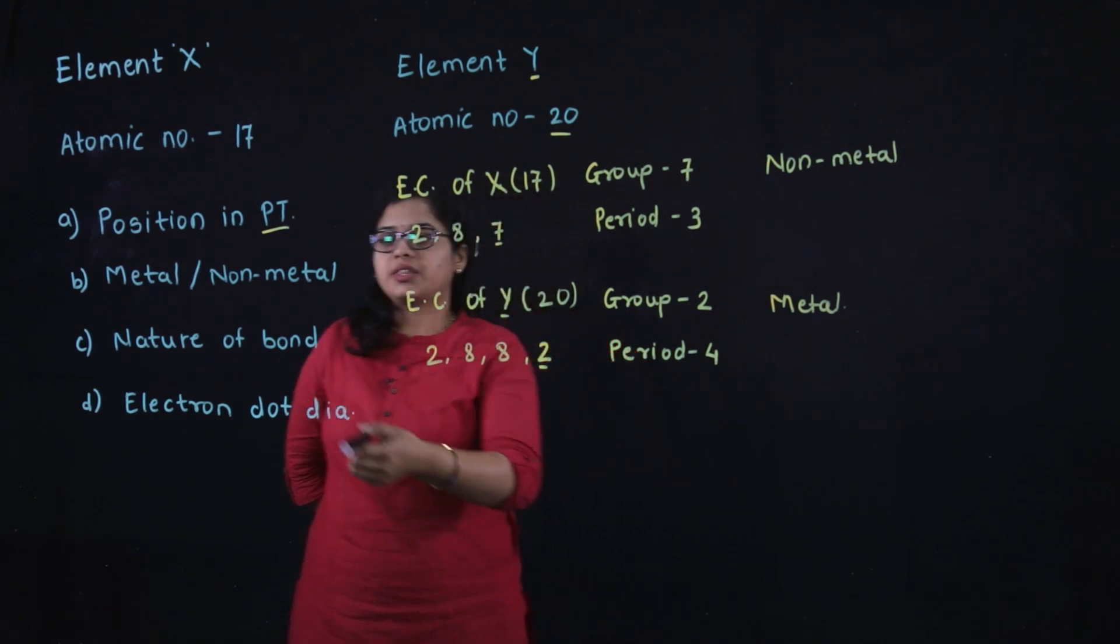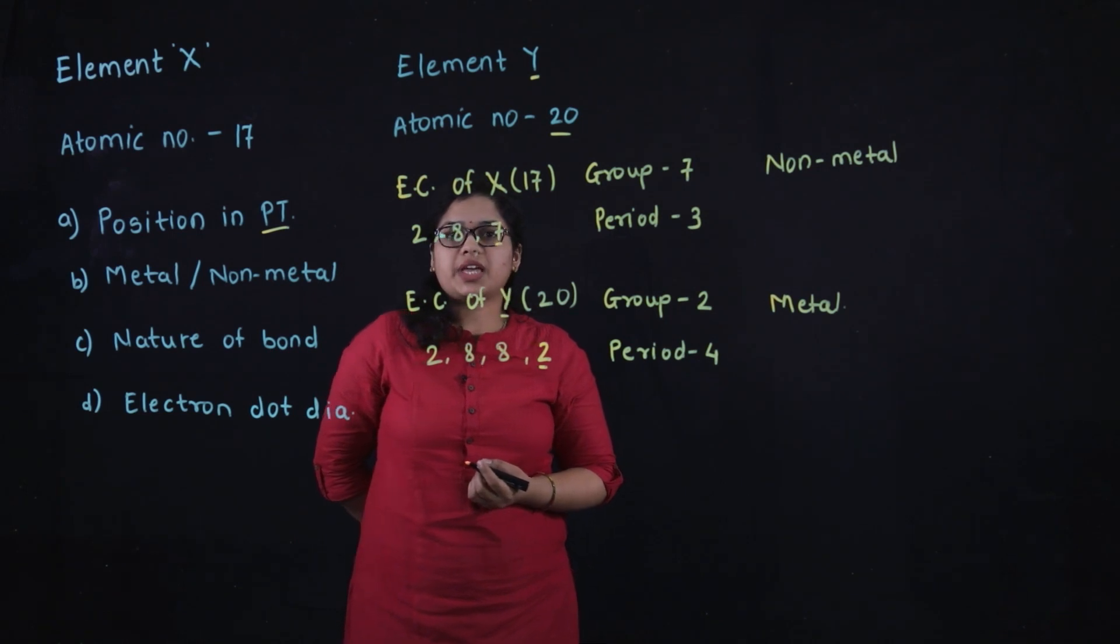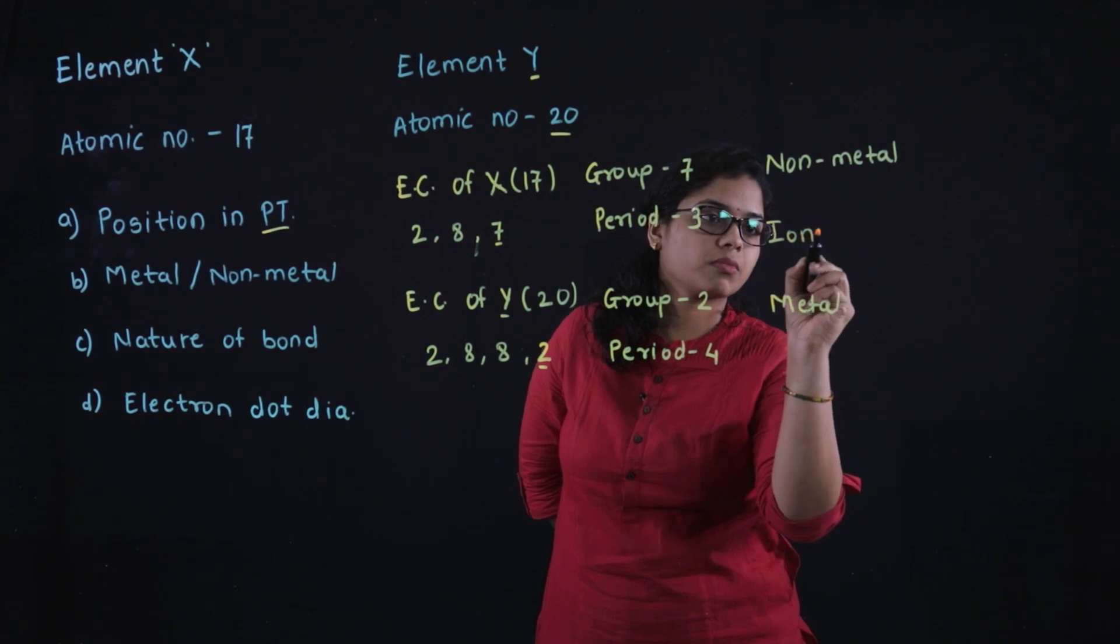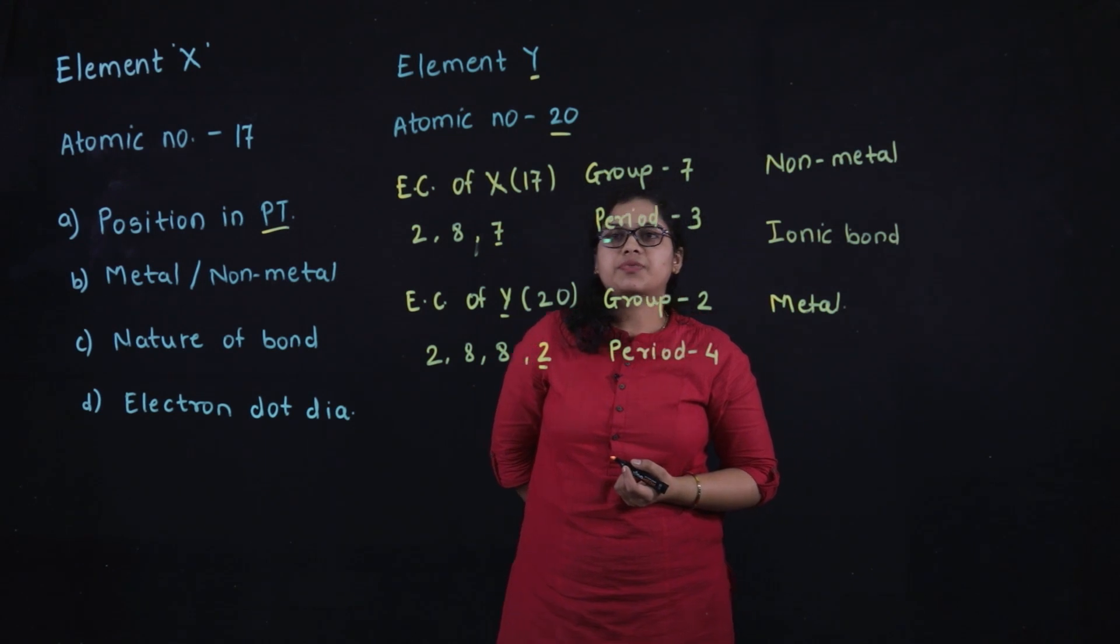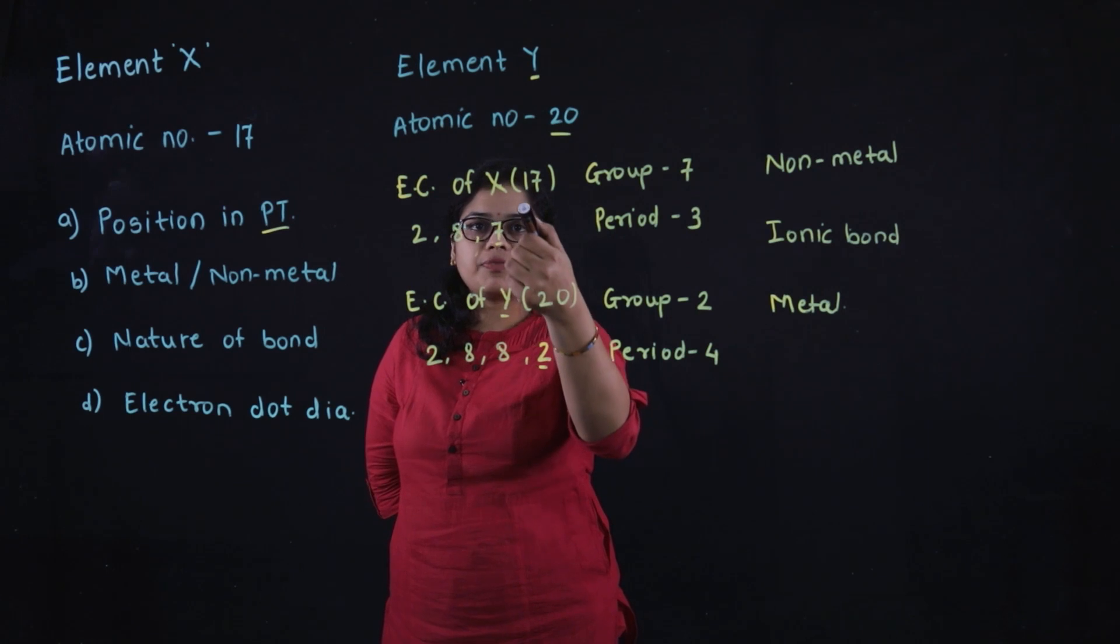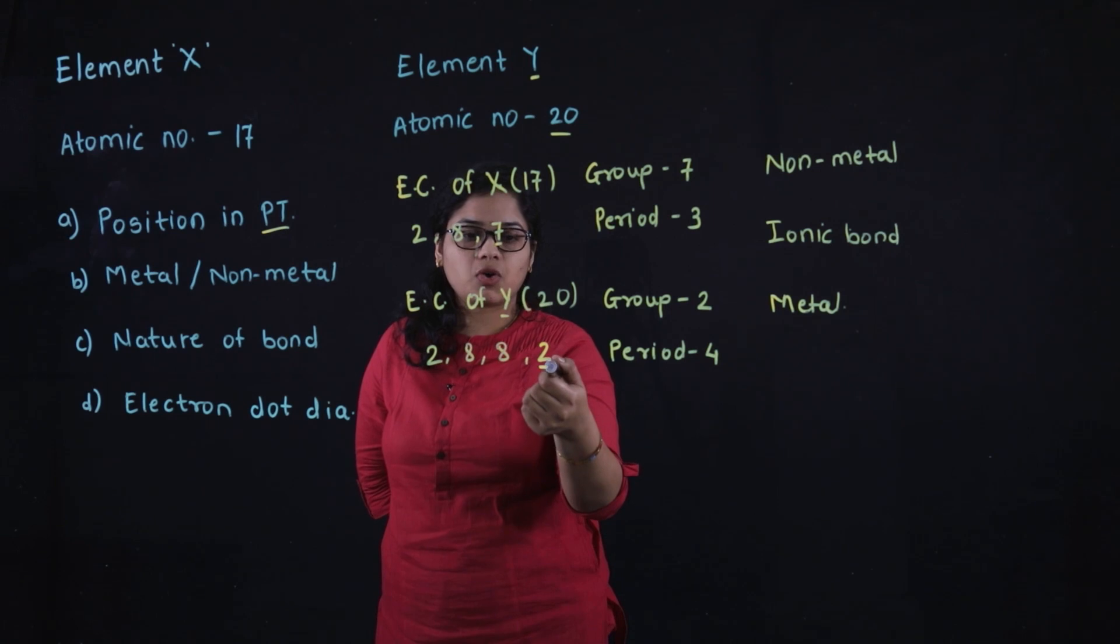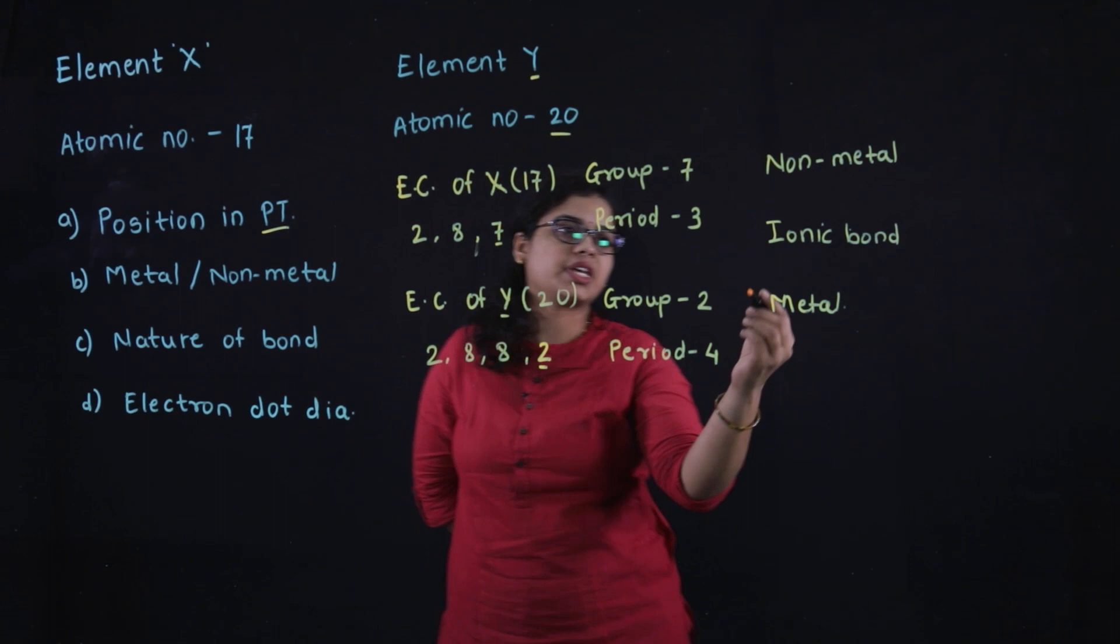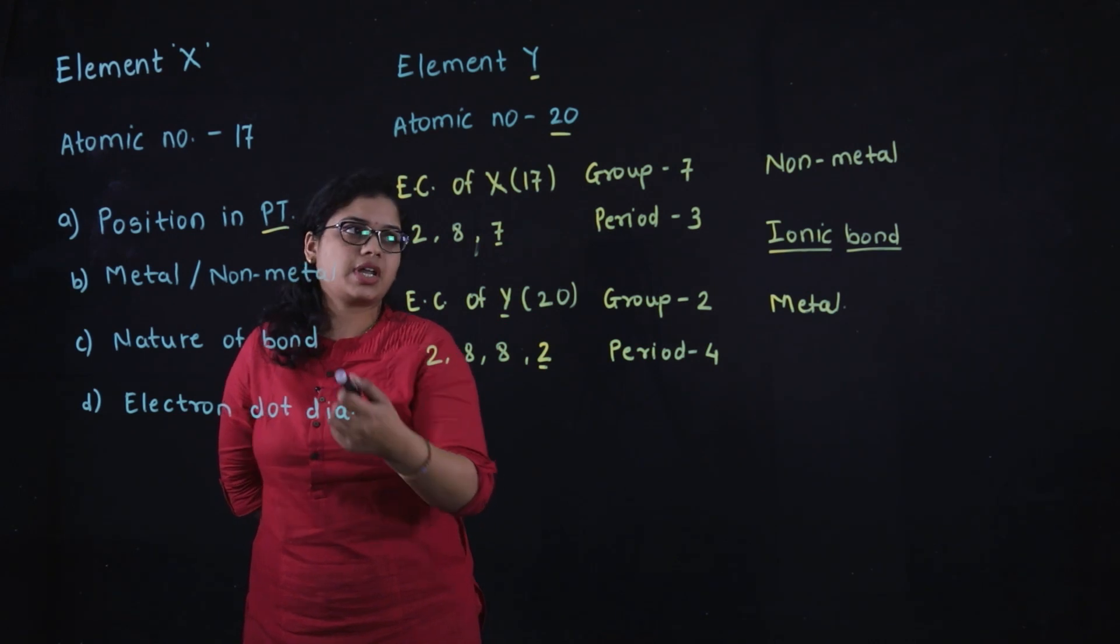Next question is the nature of bond formed between X and Y. The bond formed is an ionic bond. Ionic bonds form when there is a transfer of electrons. This bond forms when element Y donates its electrons to X to complete its octet.